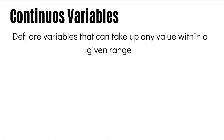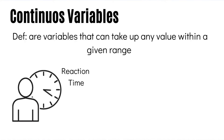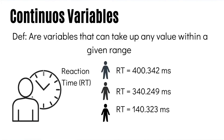Reaction time, a very common behavioral measure used in numerous cognitive tasks in psychology and cognitive sciences, is a good example of a continuous variable. Participants can have different reaction times — for example, 400.342 milliseconds, 340.249 milliseconds, or 140.323 milliseconds. These values can take up any value within a given range, making reaction times a great example of a continuous variable.